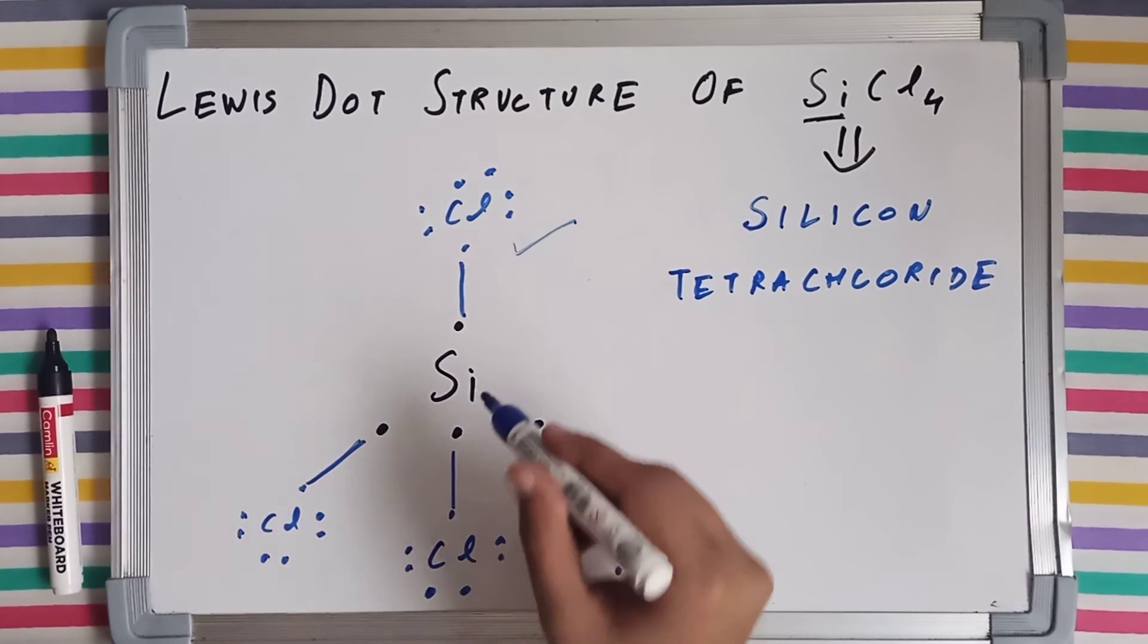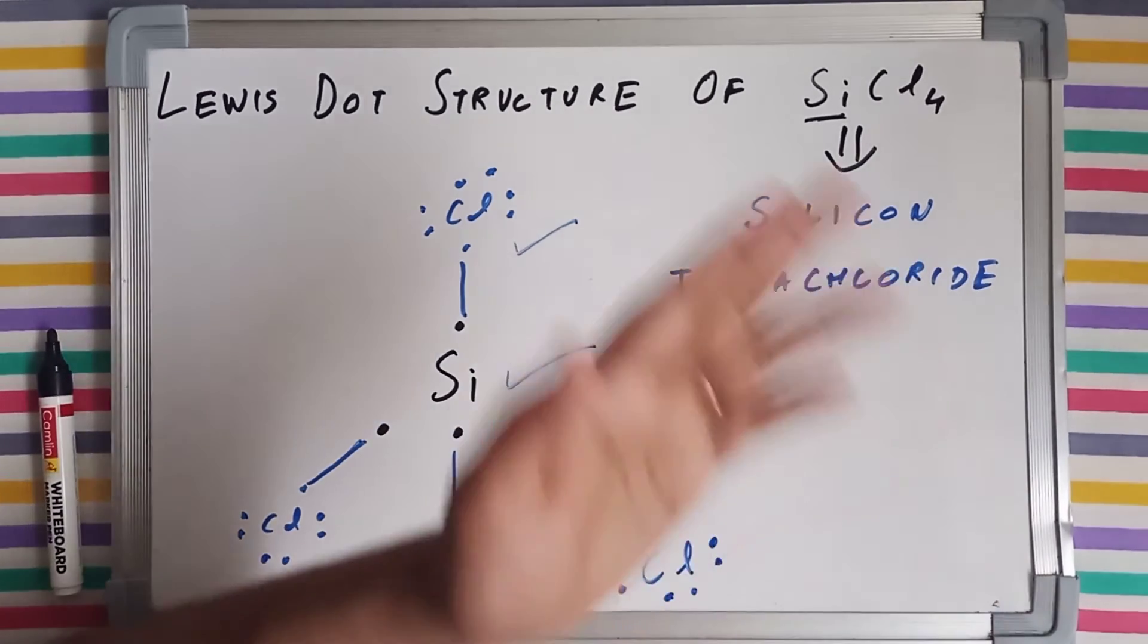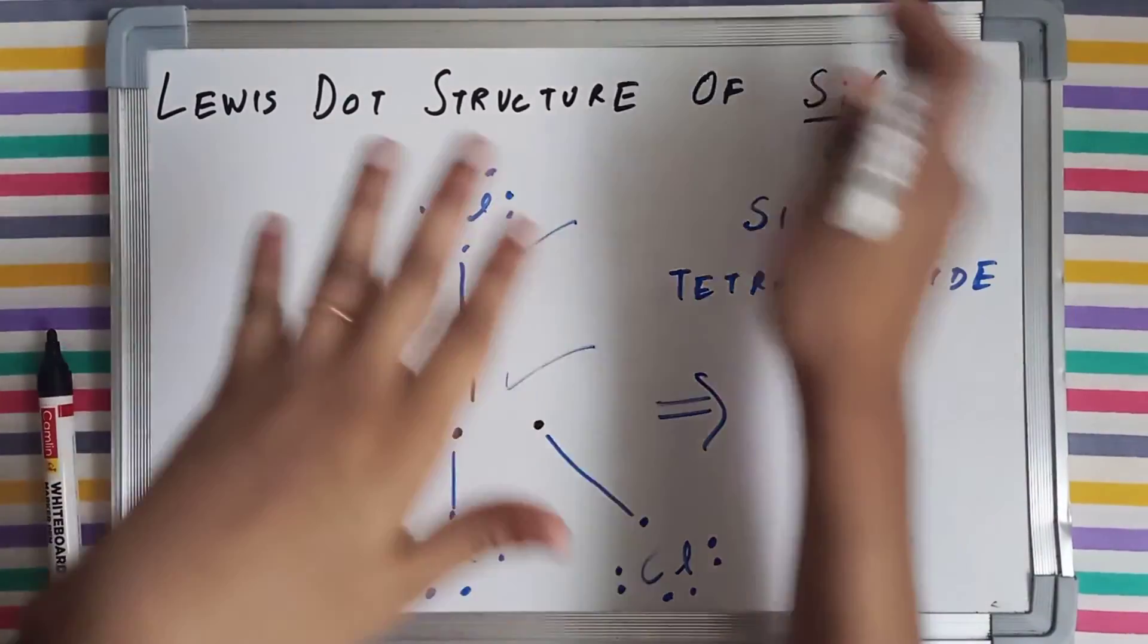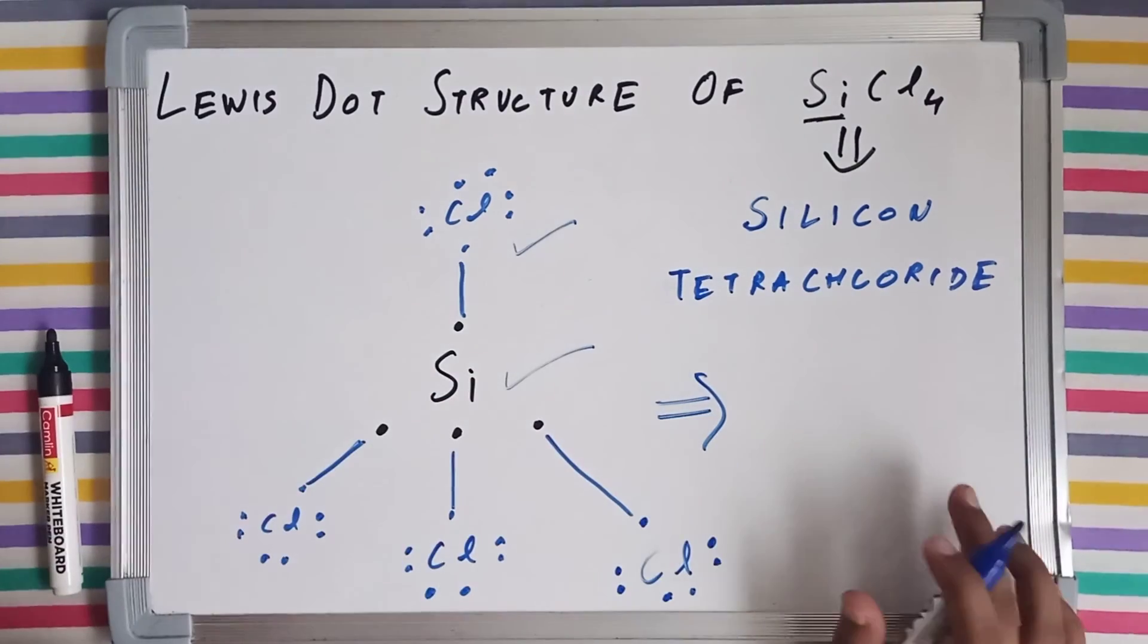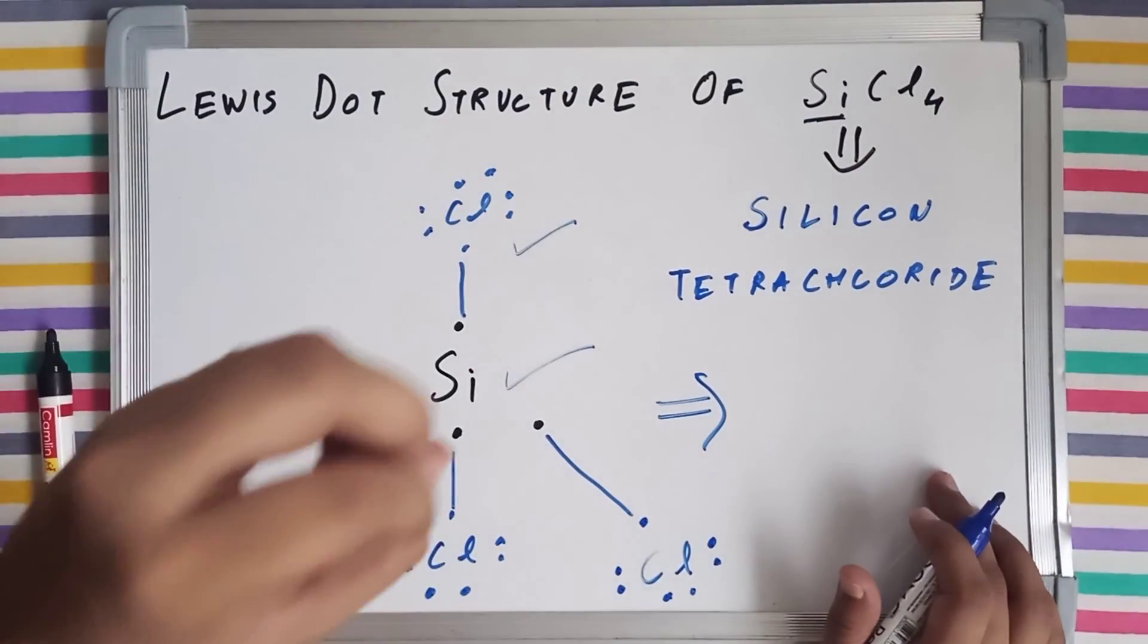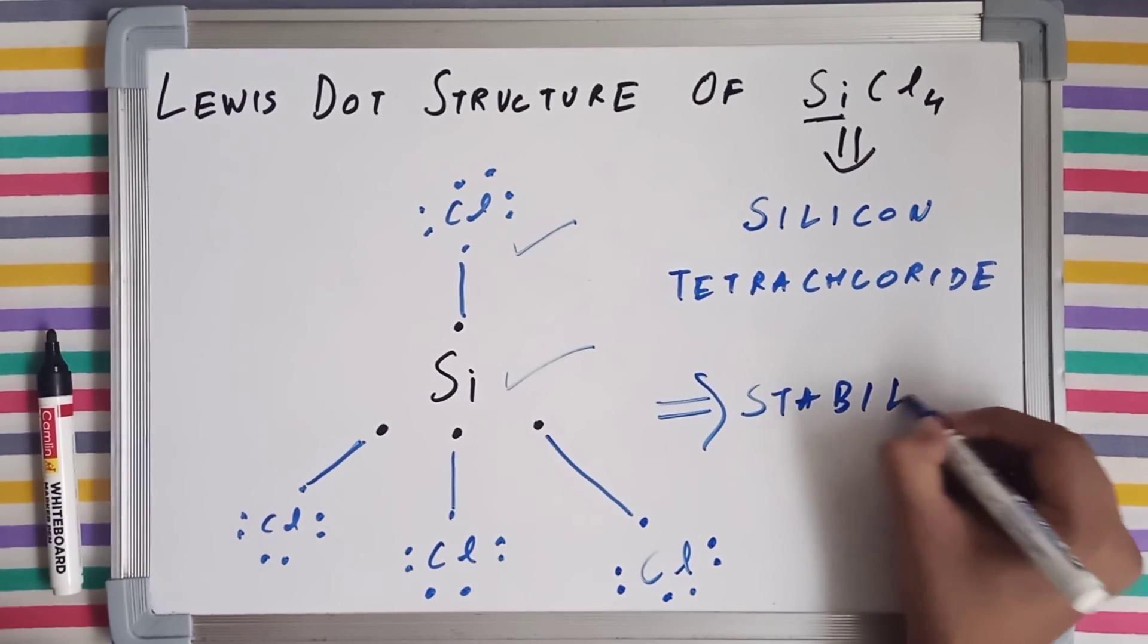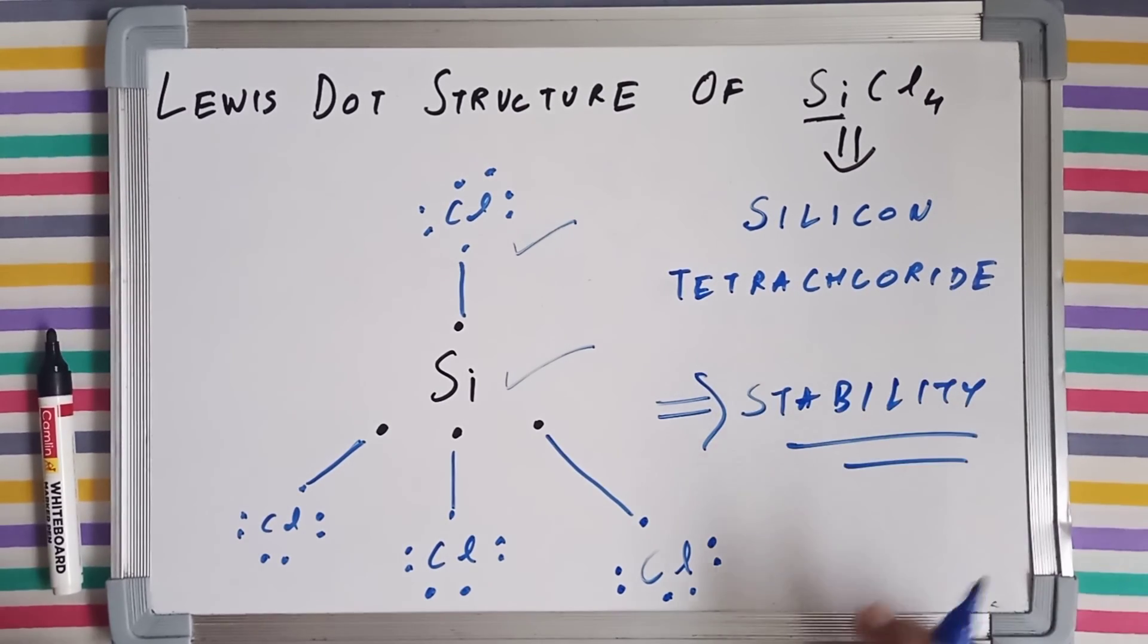Now let's check for the silicon. The silicon has one, two, three, four, five, six, seven, eight. So silicon has also completed its octet, which means now after bond formation, after the SiCl4 has been drawn, it has gained stability and we have drawn the correct structure of this particular molecule.